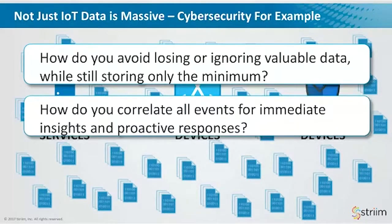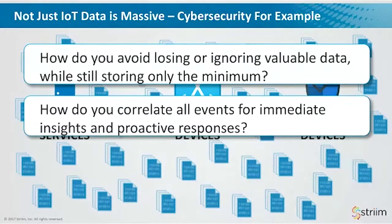You can start to think about how to convert data content to information — that's what we mean by only storing the minimum: you're storing the information. At the same time, how do you correlate events so you can do immediate responses and react instantly? With the temperature scenario, if the temperature suddenly increased to 200 degrees over less than a minute, there's a good chance the room is on fire. You need to be able to react immediately. There are more critical situations too — measuring the speed of a turbine, if it suddenly drops, you need to react in milliseconds. So how do you work on the data to only store the minimum while also being able to react immediately and give proactive responses when needed?